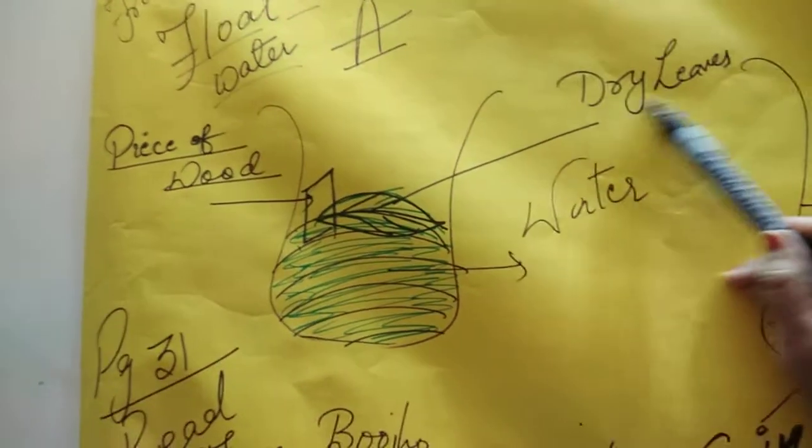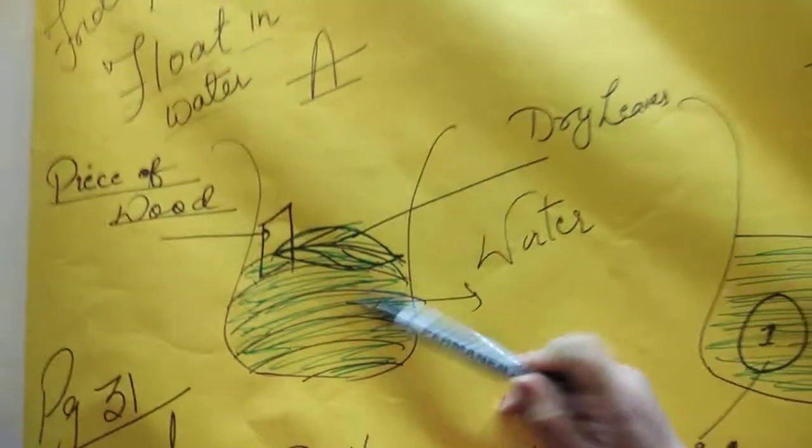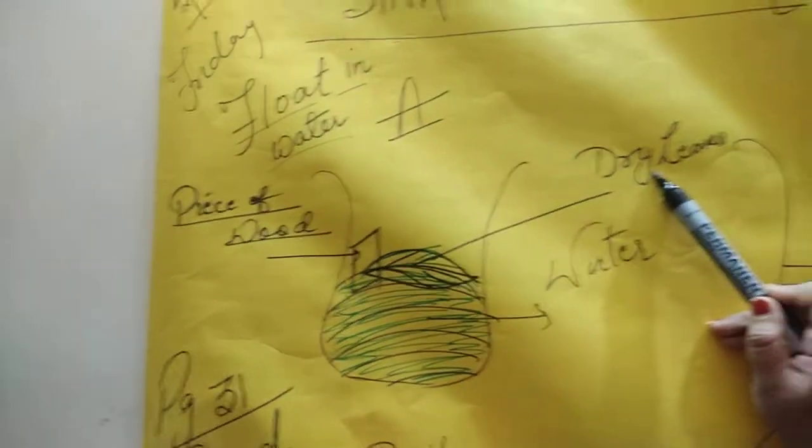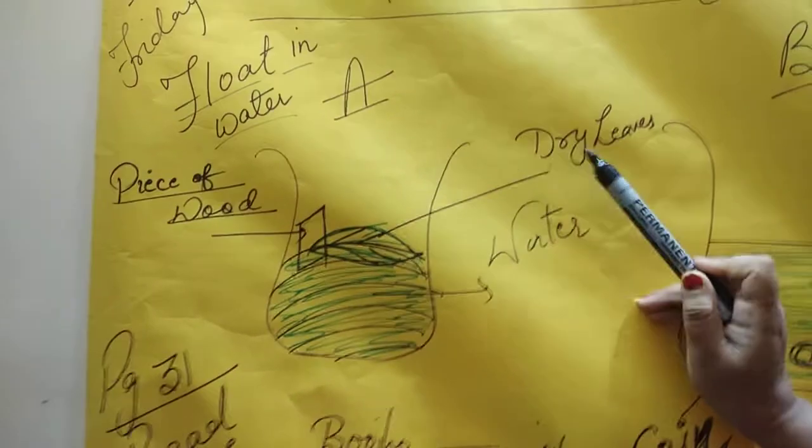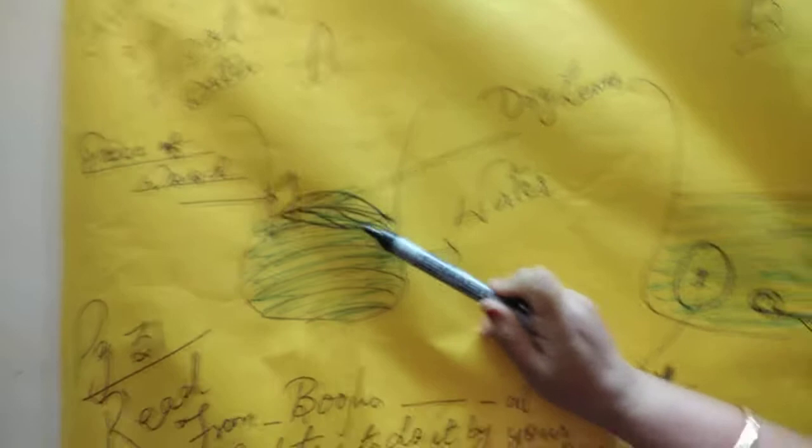Here again we come with certain dry leaves. That dry leaves is lighter than water. So objects which are lighter than water what will happen children? They will float in water.